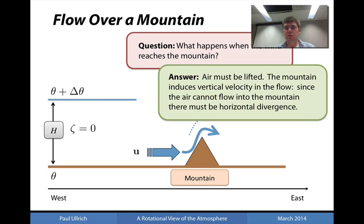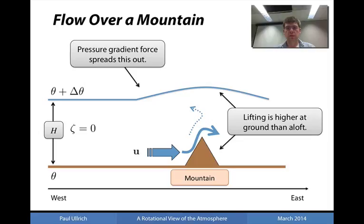And since the flow is roughly incompressible, it cannot compress itself either in order to satisfy the conditions of flow over a mountain. Consequently, there is lifting in the height of the fluid column. It is much more spread out, however, compared to the shape of the mountain itself due to the pressure gradient force. So instead what we see in the vicinity of the mountain is this shallow cap which occurs over a large east-west distance covering the range of the mountain.